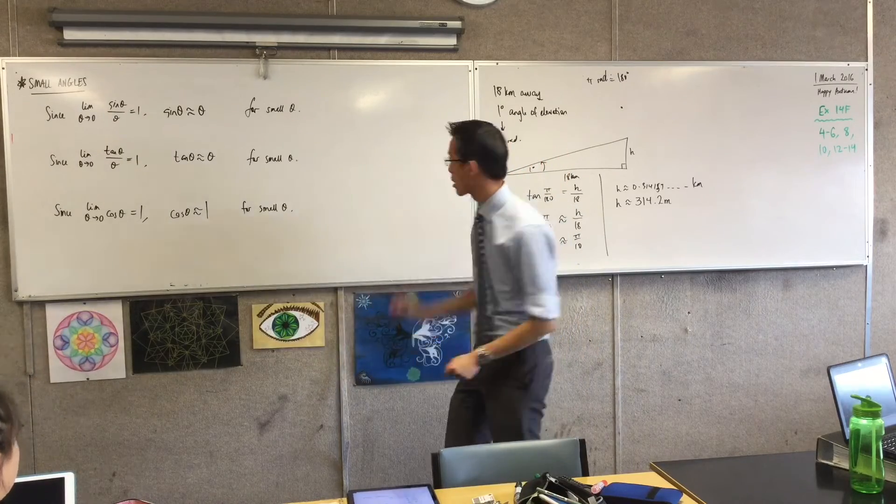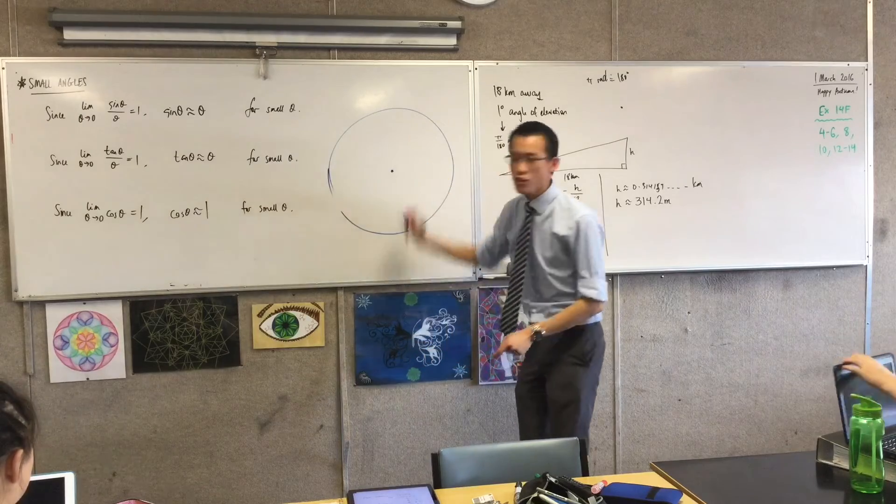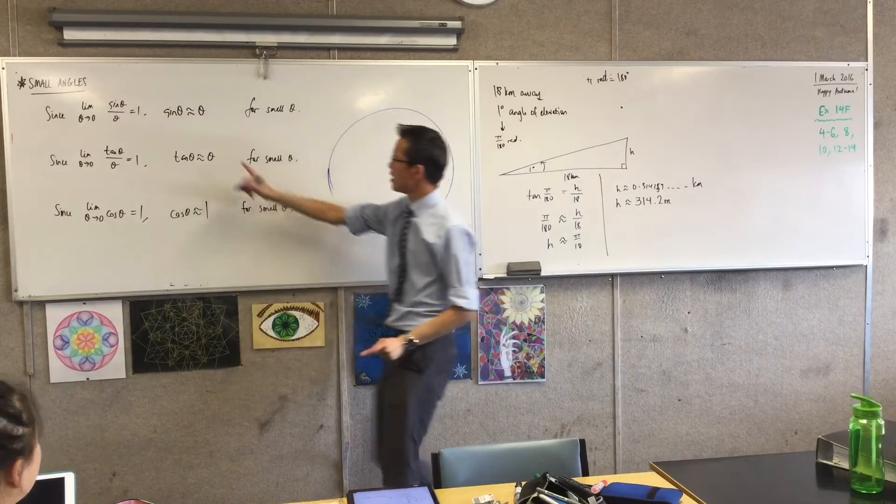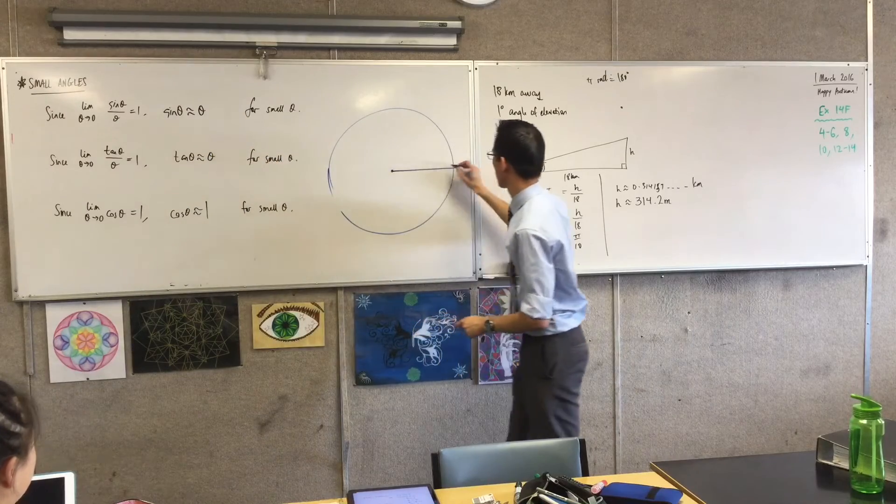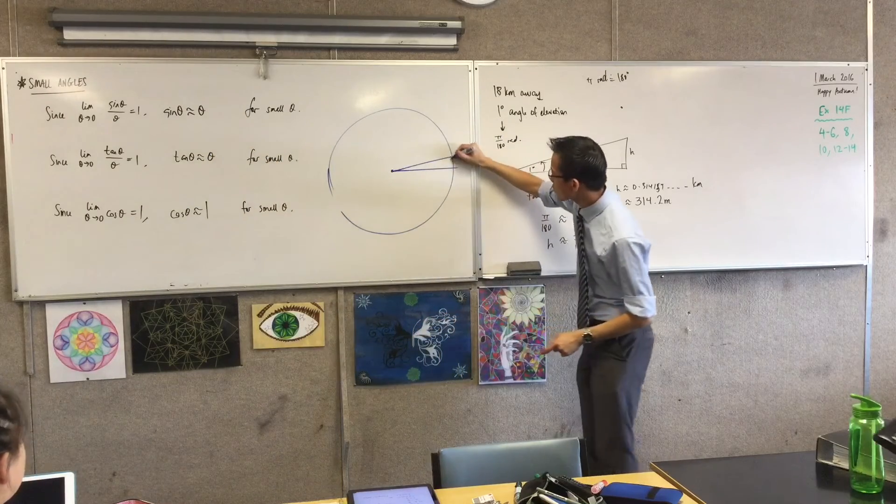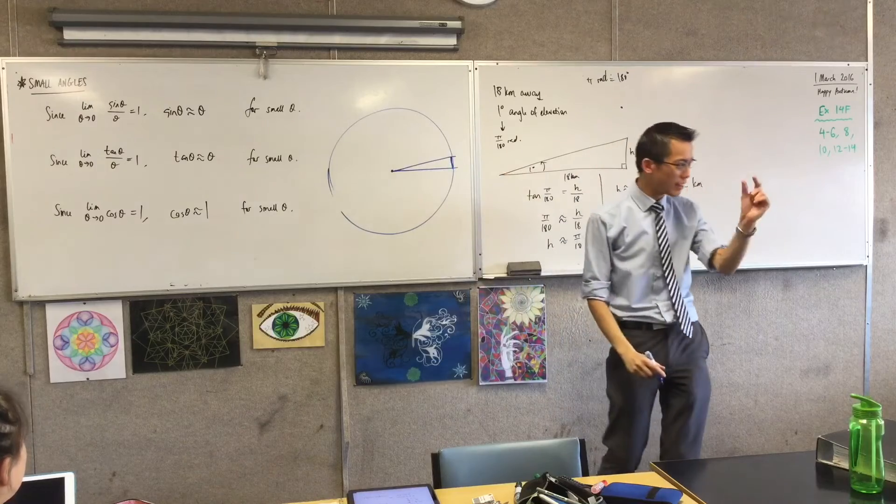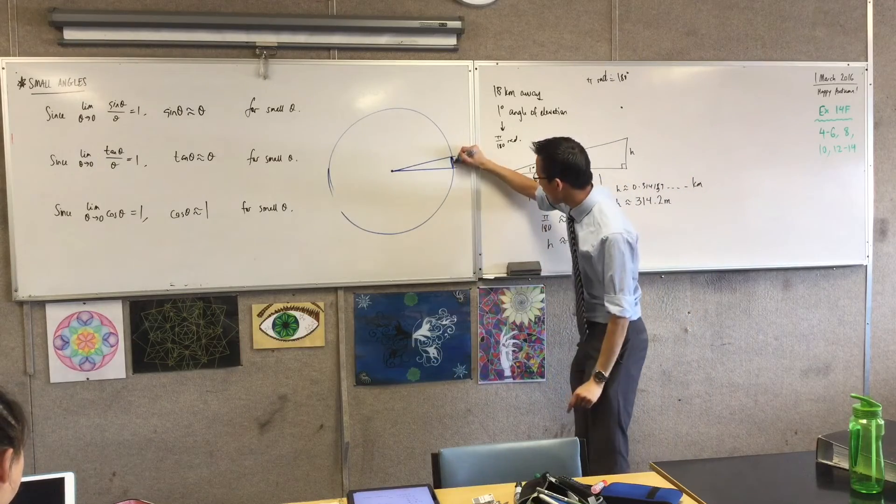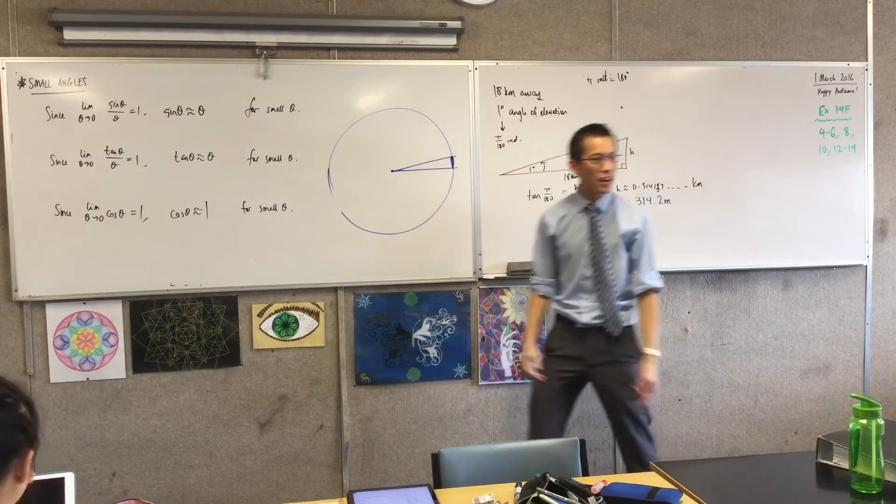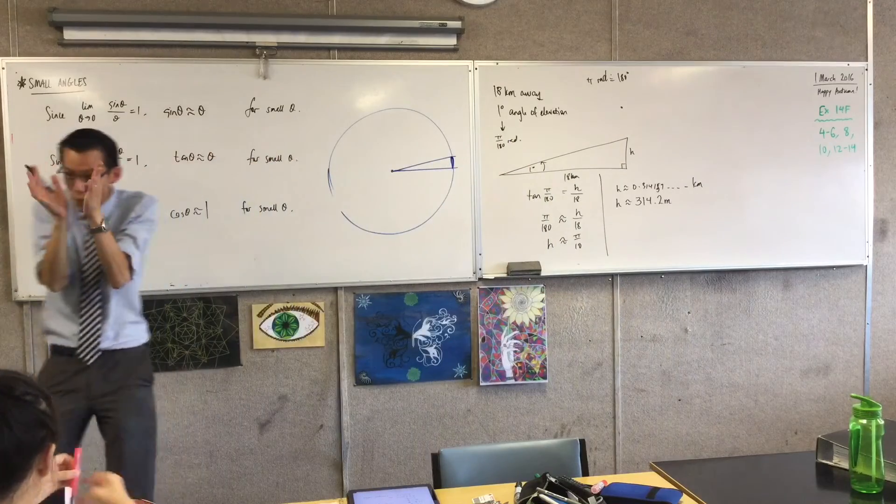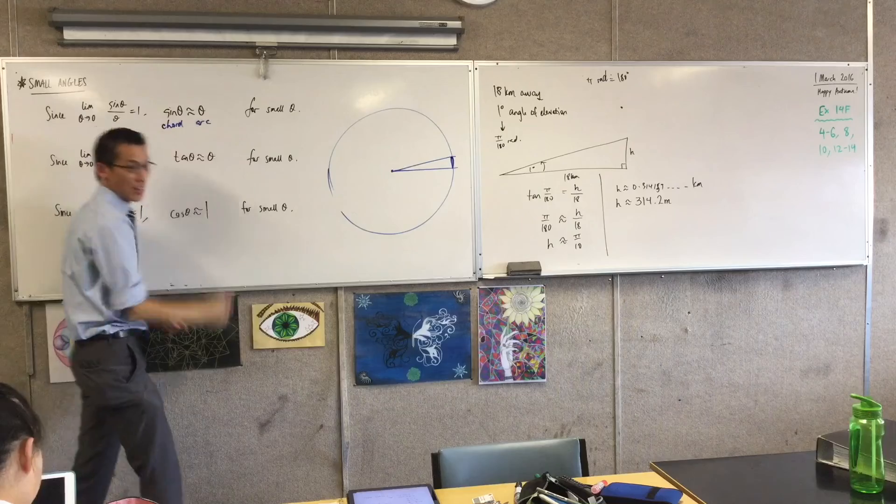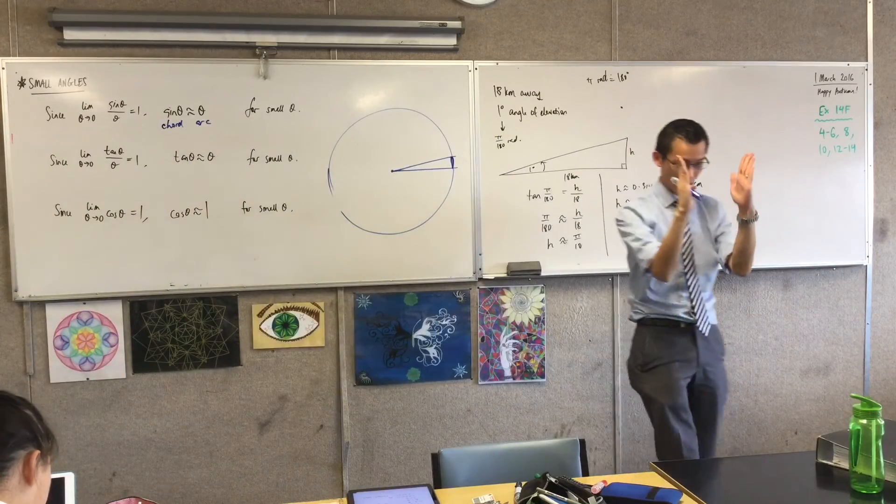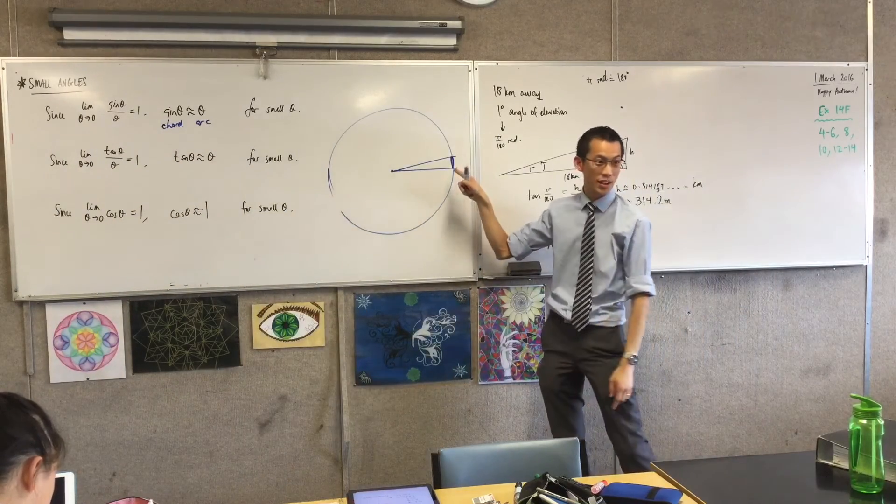Do you remember when we had the circle? And you are comparing sine theta with theta. What that's comparing really is, sine theta is this length here. It's the straight line. And theta is the arc length. And of course, when theta is very, very small, the chord and the arc are pretty much the same interval, because they get closer and get squeezed closer and closer together.